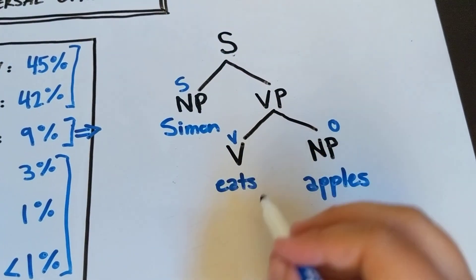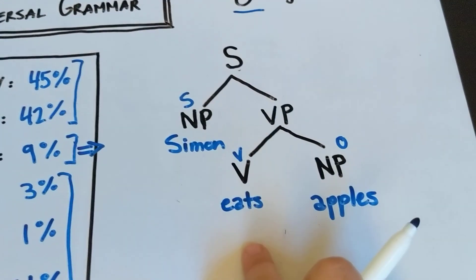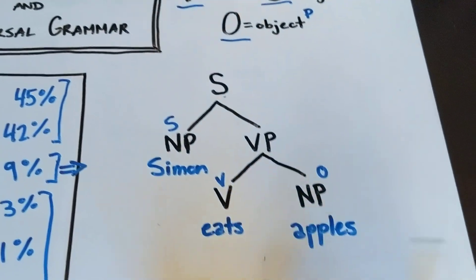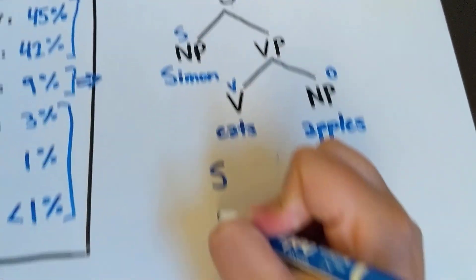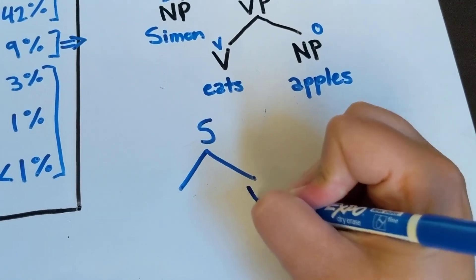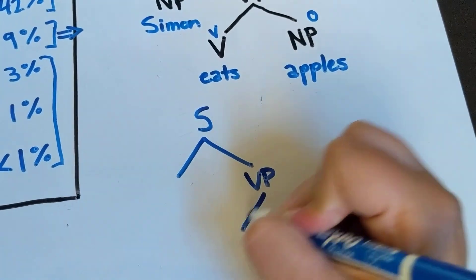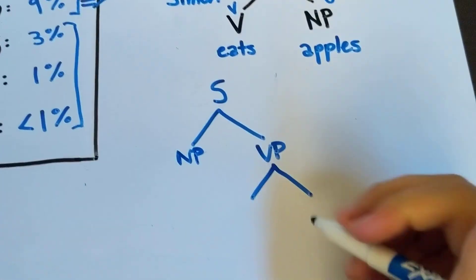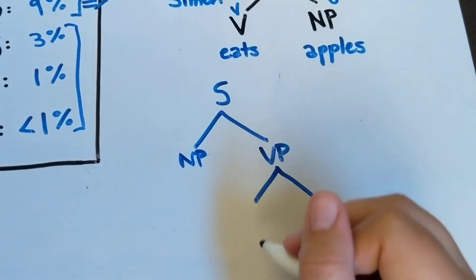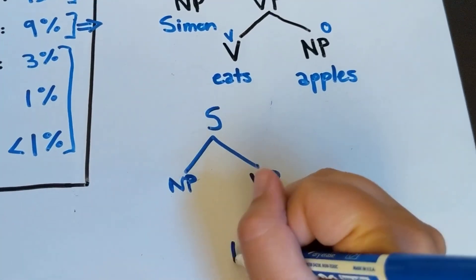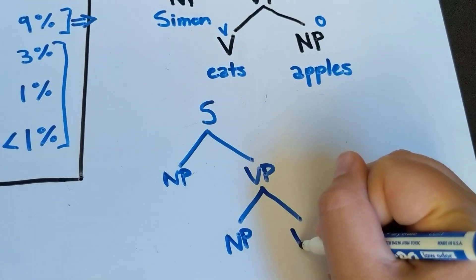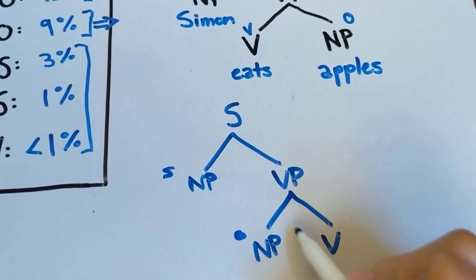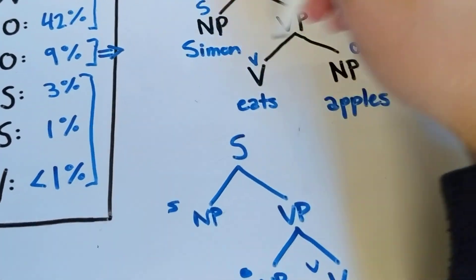Now, if we wanted to transform this into an SOV language, a member of this category, all that we have to do with this tree... We have that same tree with an NP on top, and then a VP, a verb phrase, and then a noun phrase, and then a noun phrase, and a verb.